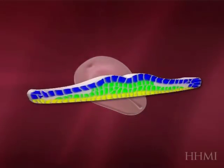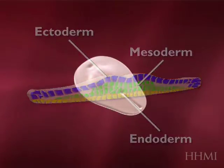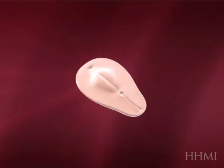Here's an important stage when the three beginning layers of the embryo — the so-called germ layers — are formed. And I'll come back to that in a few minutes.